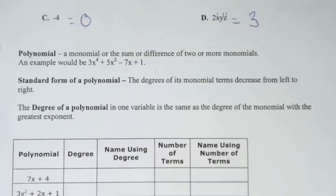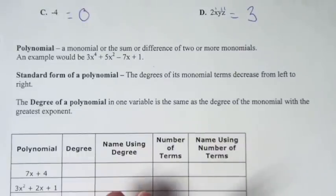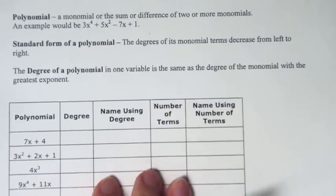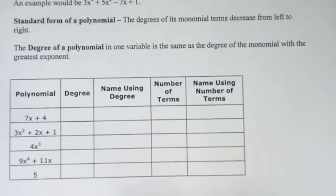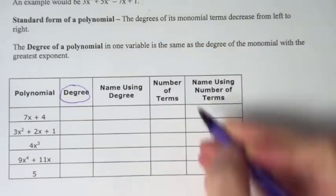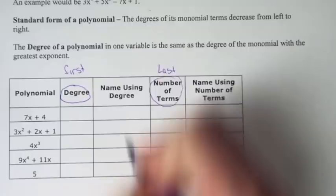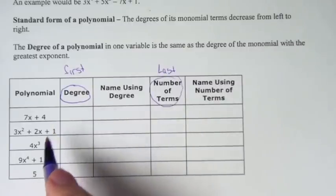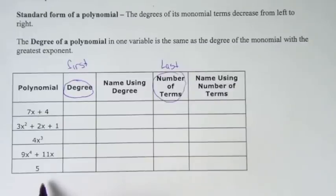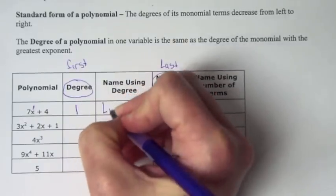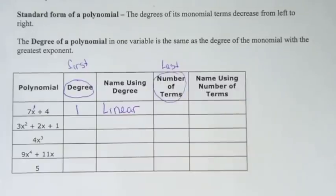We can also name each polynomial — each polynomial has a first name and a last name. The first name has to do with the degree, and the second name has to do with the number of terms. Looking at 7x plus 4, which monomial has the bigger degree? The 7x has a degree of 1, so that polynomial has a degree of 1. If we have a polynomial with degree 1, its first name is called linear. A degree-one polynomial's first name is linear.